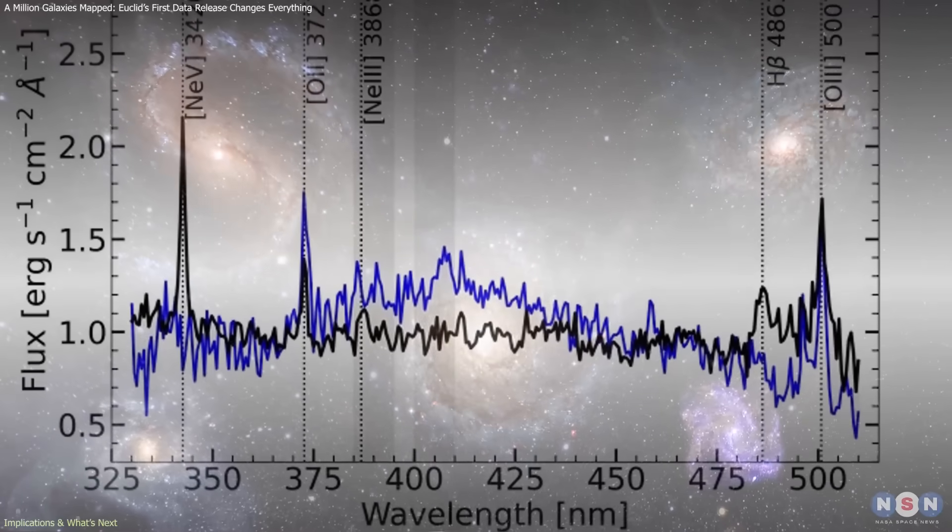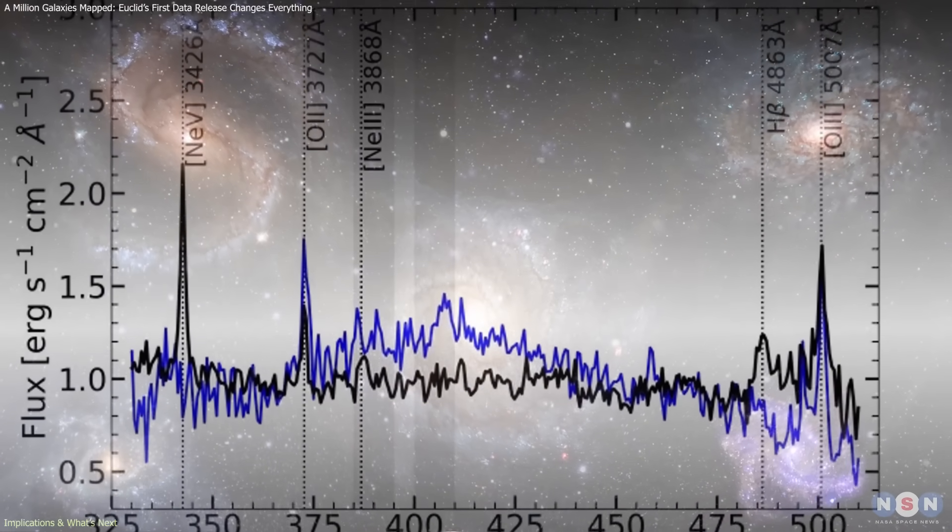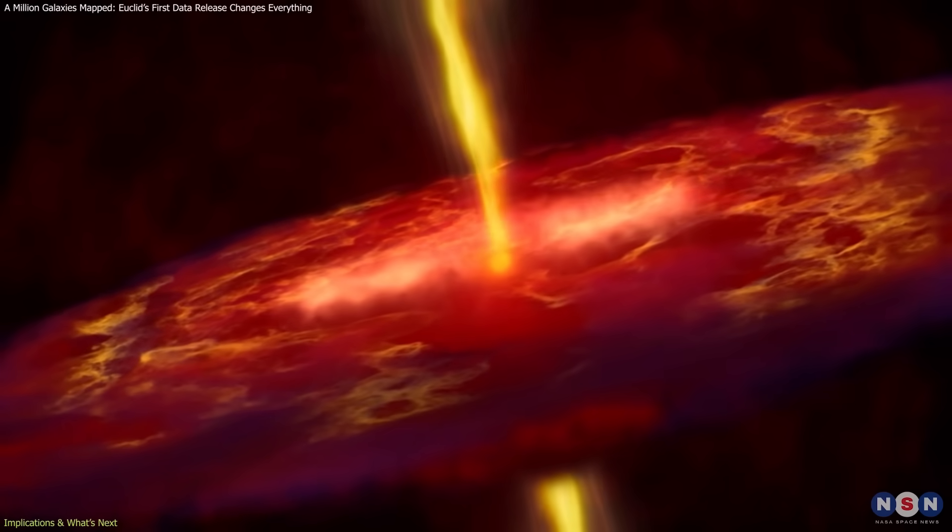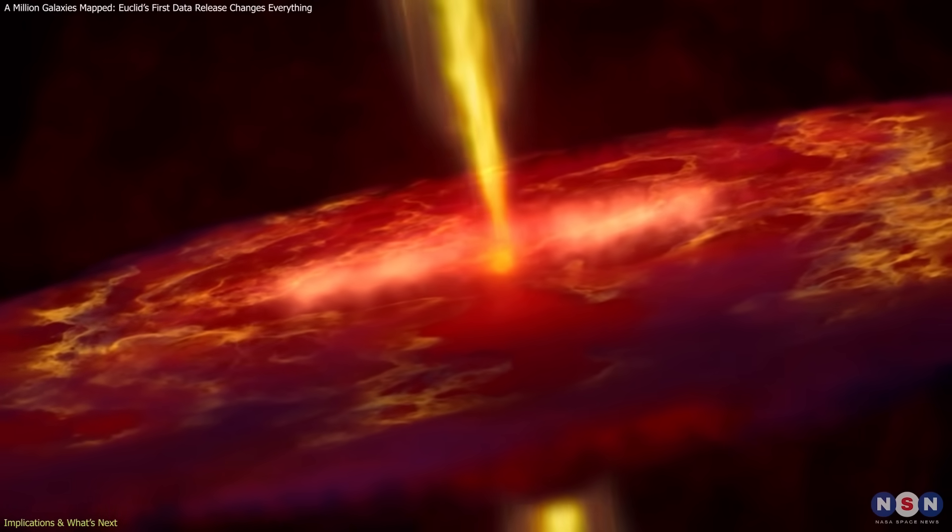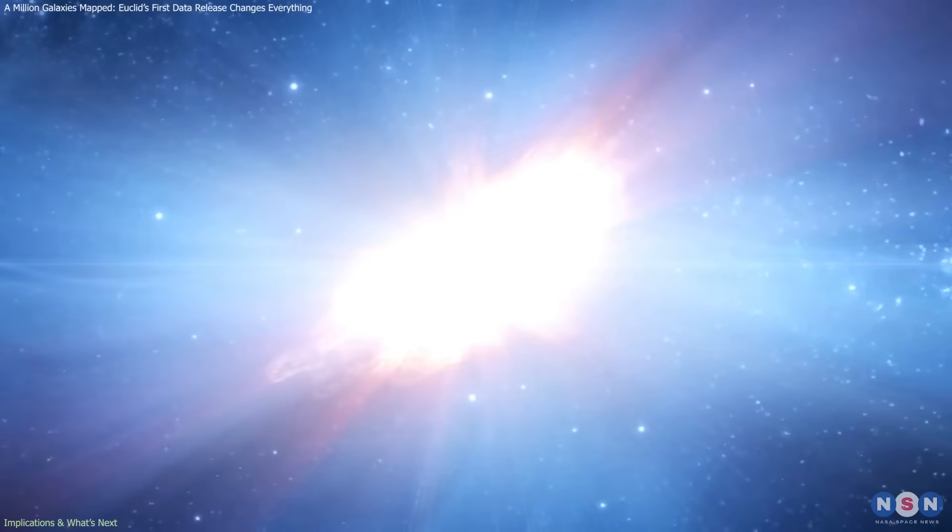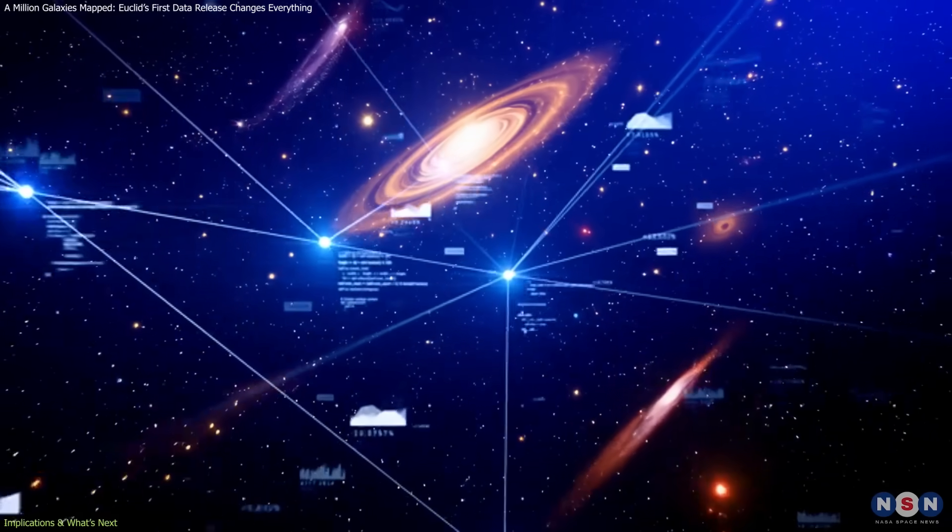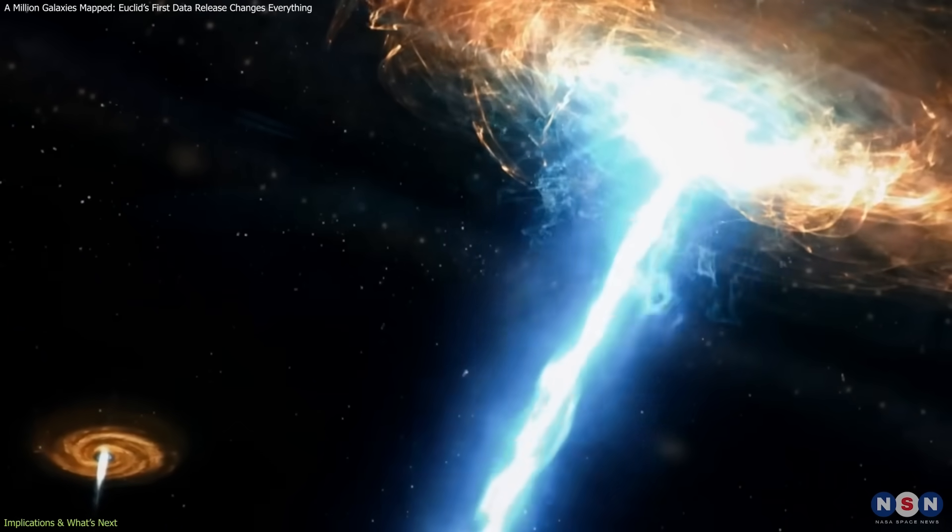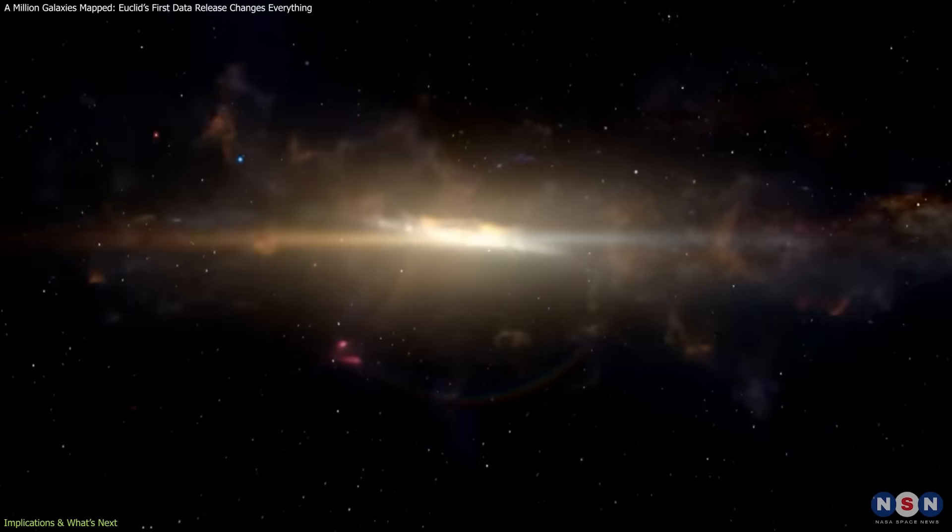The highly ionized galaxies offer immediate follow-up opportunities. With additional spectroscopy, astronomers can determine whether their extreme emission comes from black hole activity, shocks, or rare classes of massive stars. Mapping these objects across different distances will reveal when such energetic environments were most common and how they influenced surrounding gas and star formation.